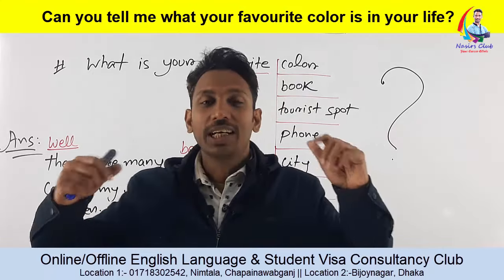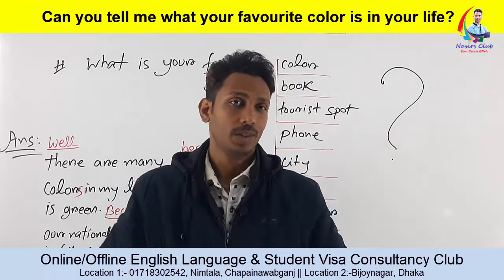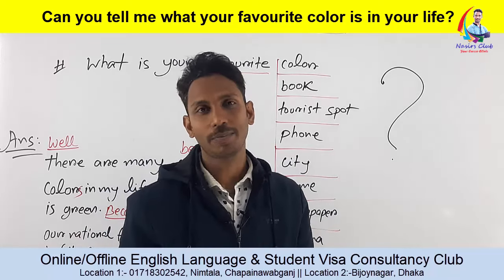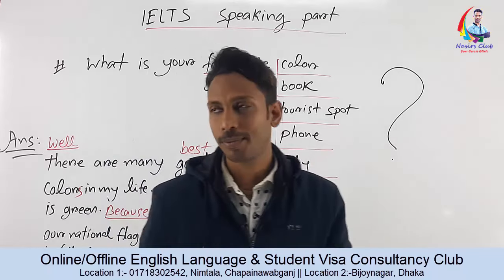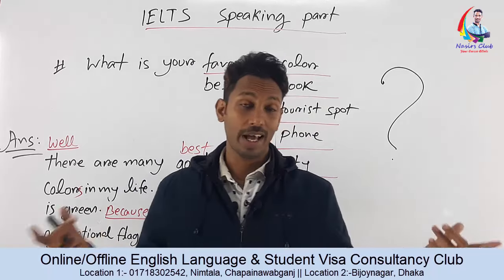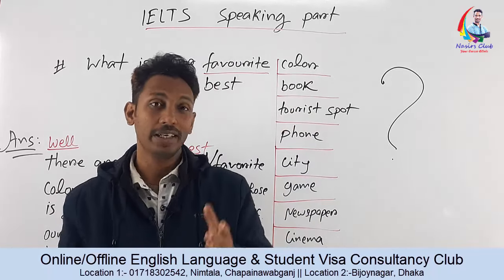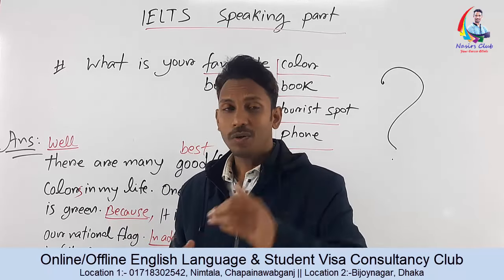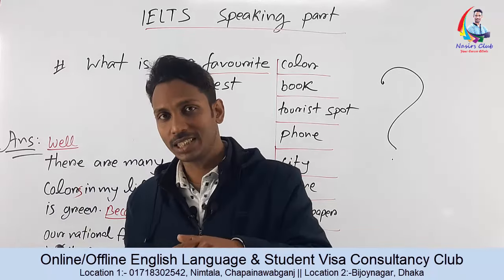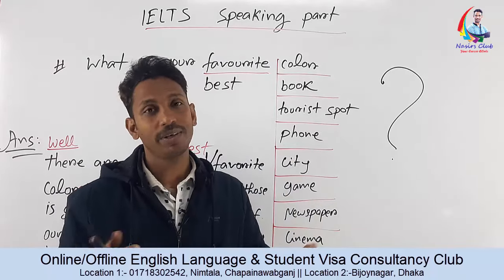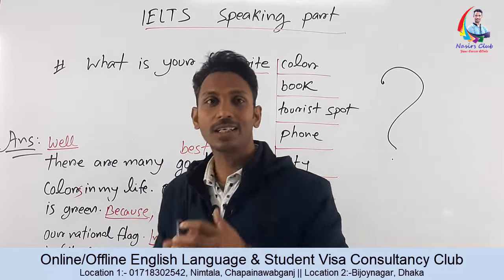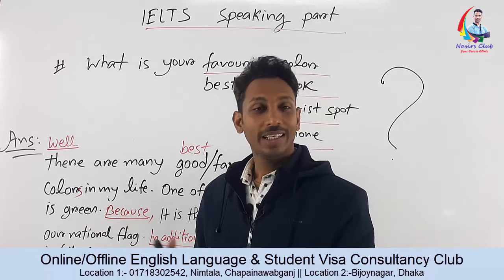Now let's examine the full model answer. 'Well, sir, there are many favorite colors in my life. One of them is green. It's because one of my girlfriends, Sumi, gave me a shirt of green color. In addition, it is the color of our national flag. Moreover, this country is full of green crops.' That is the complete answer.